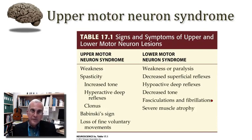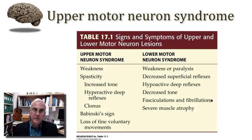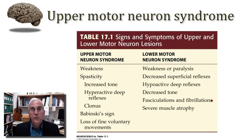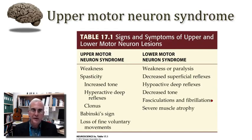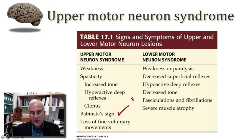There may be some atrophy due to not much use of the affected body regions, but the atrophy will not be nearly as severe as what is seen over time with damage to lower motor neurons and the loss of innervation of that muscle tissue. Remember, with damage to upper motor neurons, the muscle is still innervated. The problem is that the output of lower motor neurons is no longer governed and regulated in a normal fashion, and that's why we see the emergence of these special signs.